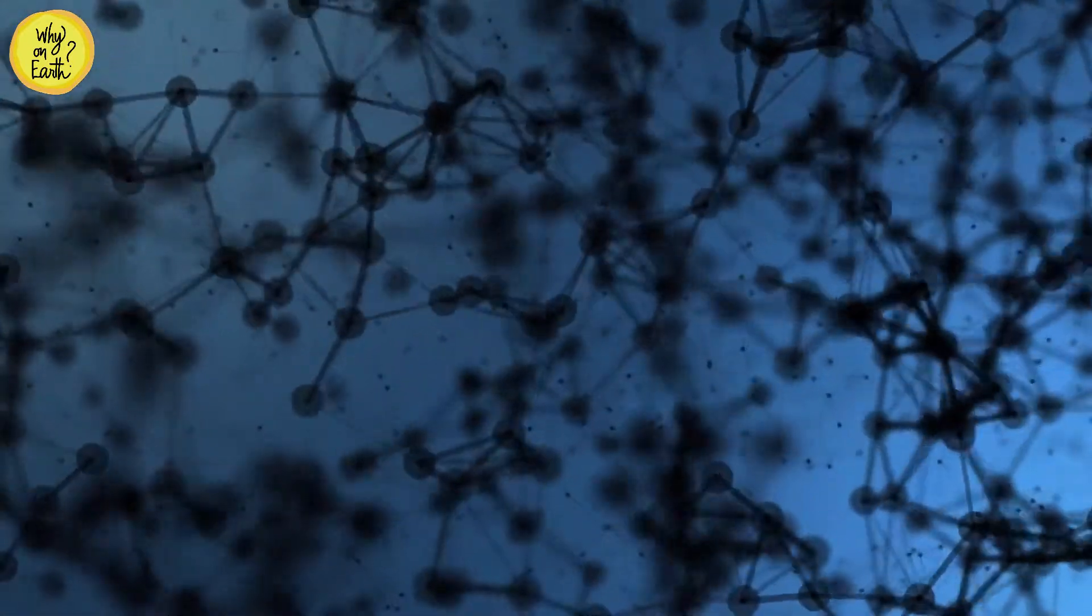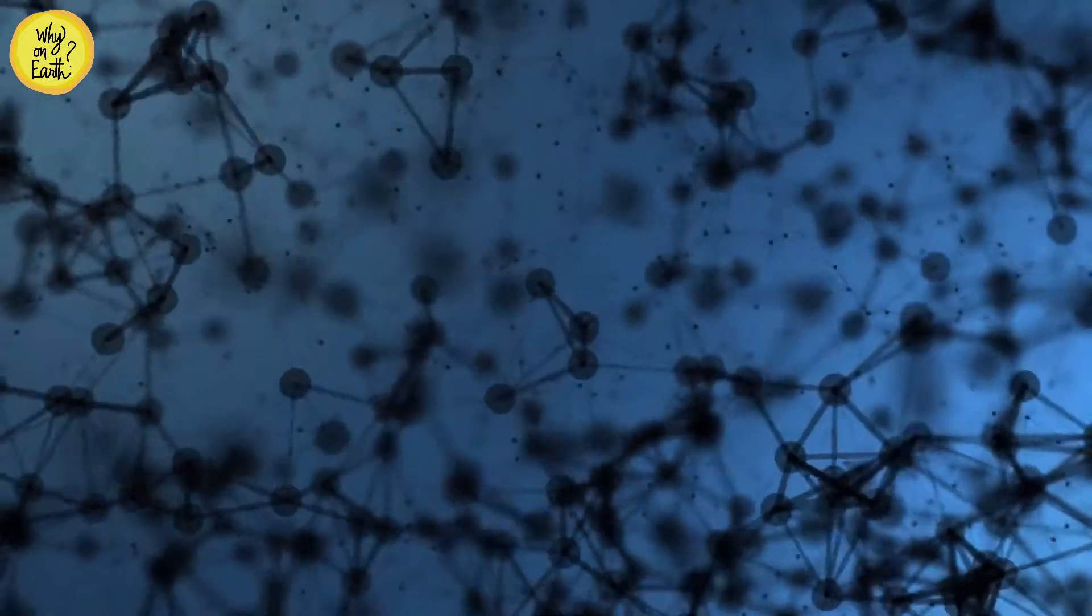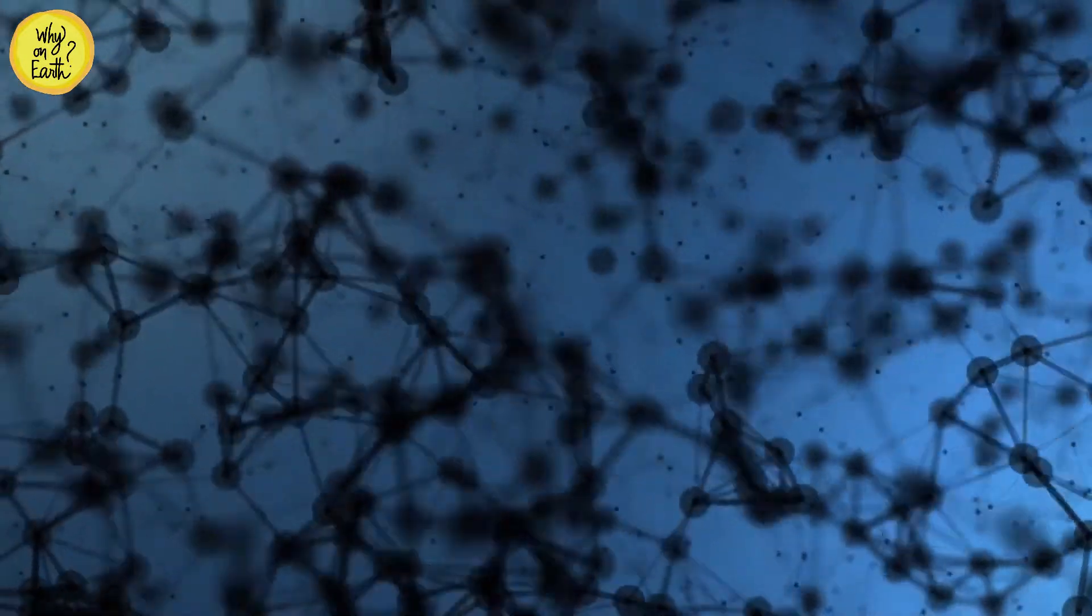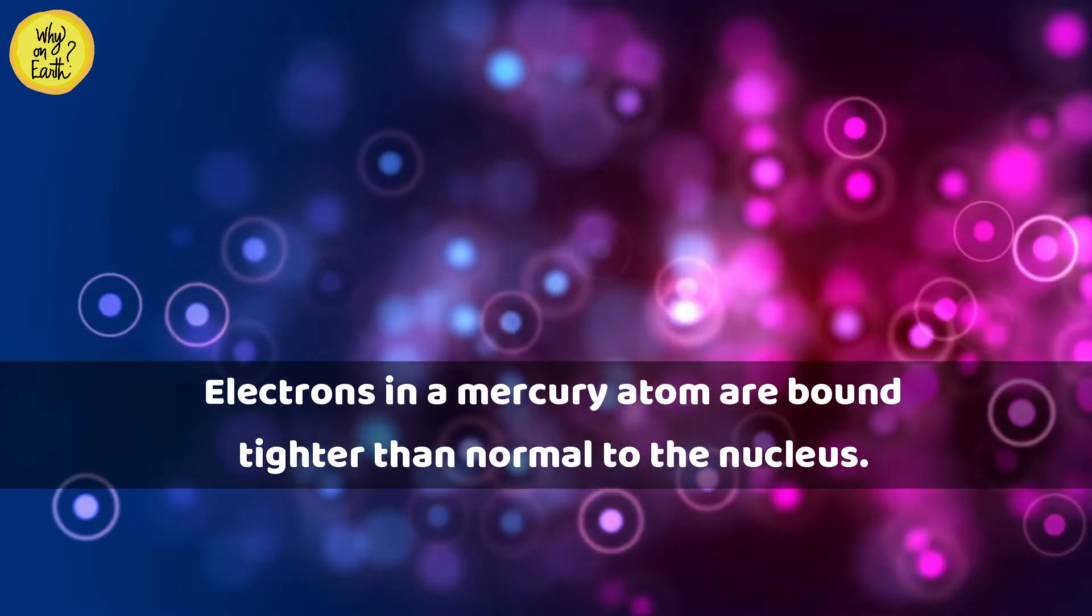Most metal atoms easily share their valence electrons with other atoms. The valence electrons are the outermost electrons in an atom, so they are most prone to participate in chemical bond formation or ionization. The electrons in a mercury atom are bound tighter than normal to the nucleus.